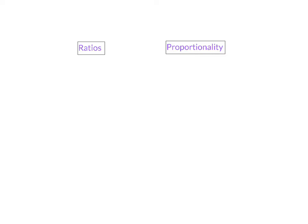Before we can start with the theorem, there are two definitions that I'm going to remind you of. The first one is a ratio. A ratio can be written as a to b or as a over b. It's important to remember that a ratio is not an actual distance. If we have a look at this line with a 10 and a 20 centimeter part, we can write down the ratio as 10 to 20, but that can be simplified to a half. That half is not an actual distance, but the one and the two simply indicates the ratio of the distance.